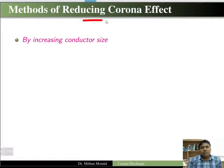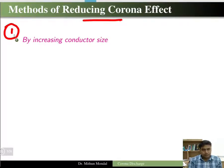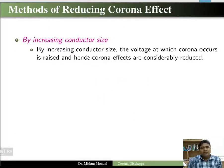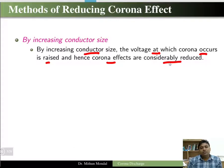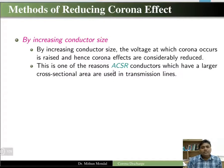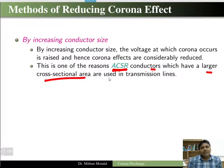The first method to reduce corona is by increasing the conductor size. A conductor with a larger diameter requires more voltage to produce corona, considerably reducing the corona effect. This is one reason we generally use ACSR — aluminium conductor steel reinforced conductors — which have a larger cross-sectional area in transmission lines.